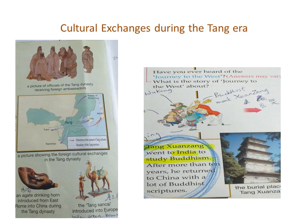As you can see in the pictures, an agate drinking horn was introduced from East Rome into China during the Tang Dynasty, and there is a sculpture of a camel which was introduced into Europe. The picture on the right tells the story of the Buddhist monk Xuanzang's journey to India to obtain religious texts during the Tang Dynasty. This was famously known as 'Journey to the West' — I'm sure most of you have read the series, which is a very popular TV series, movie, and book.